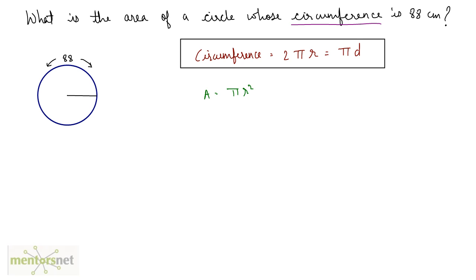So circumference is 88 is equal to twice into the value of pi that's 22 by 7 times r is what we have to find. So we have r is equal to 88 into 7 upon 2 into 22, 22 times 4 is 88 and 2 times 2 is 4. So radius is 7 to the 14 cm.